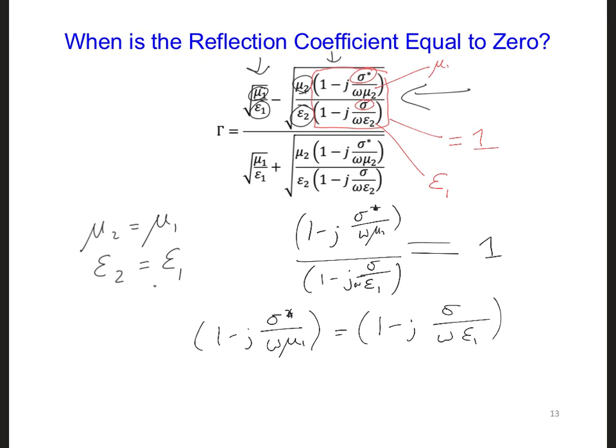So now I'm going to move the denominator to the right side. We can simplify this further. We can get rid of the 1, subtract 1 from both sides, cancel the j's and cancel the omegas. We're just left with sigma star over mu1 equals sigma over epsilon1. Now we can solve for sigma star, which is equal to sigma times mu1 over epsilon1.